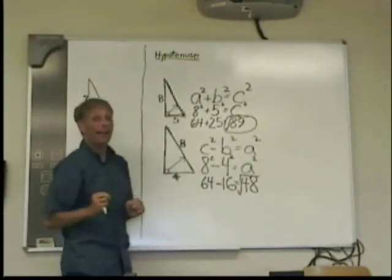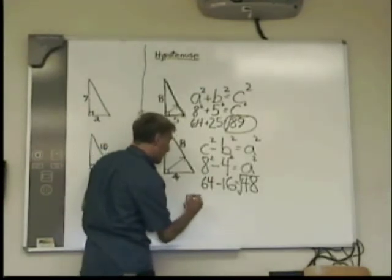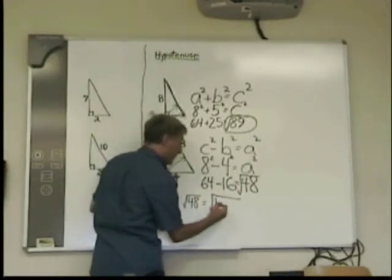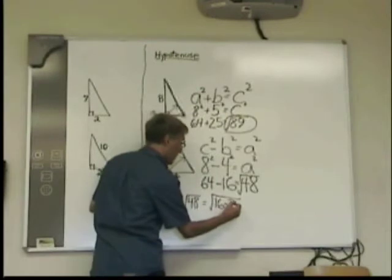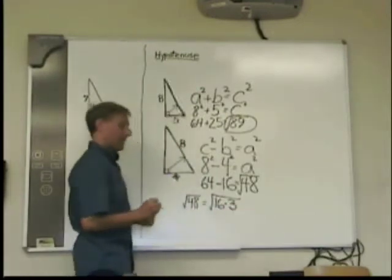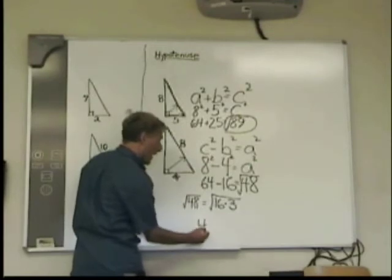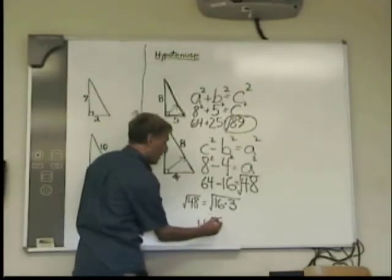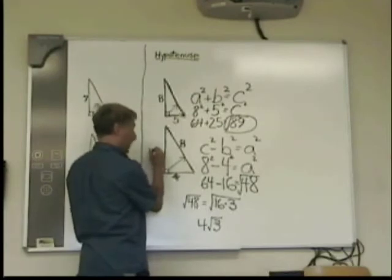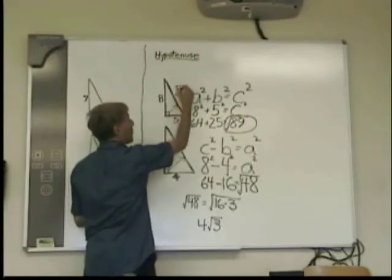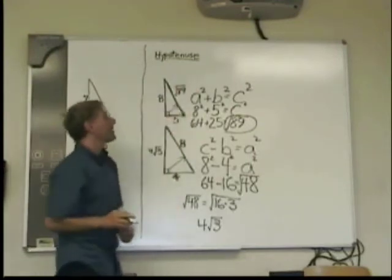I can simplify that radical. 48 in a radical can be simplified as 16 times 3. And that gives me the 4 on the outside, radical 3. So that would be this missing side here. This missing side would just be radical 89 because I can't simplify it.